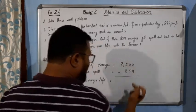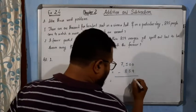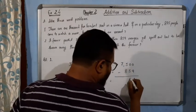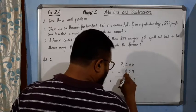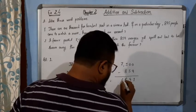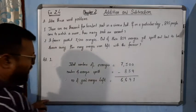Again it will carry, like this. 10 minus 9 gives you 1, 9 minus 5 gives you 4, 14 minus 8 gives you 6, and this 6. So 6641.